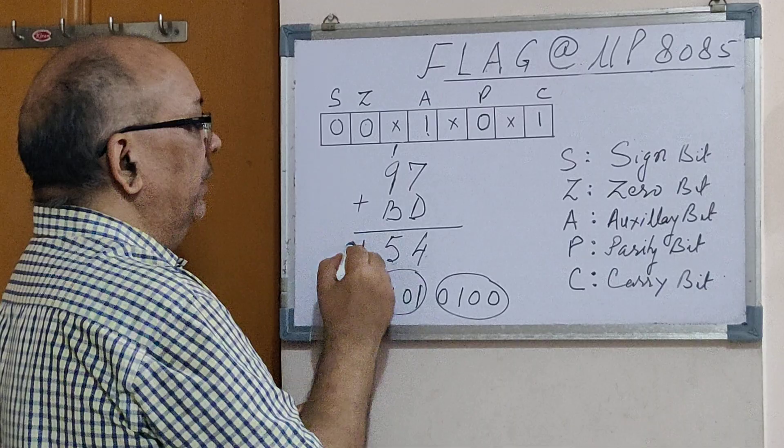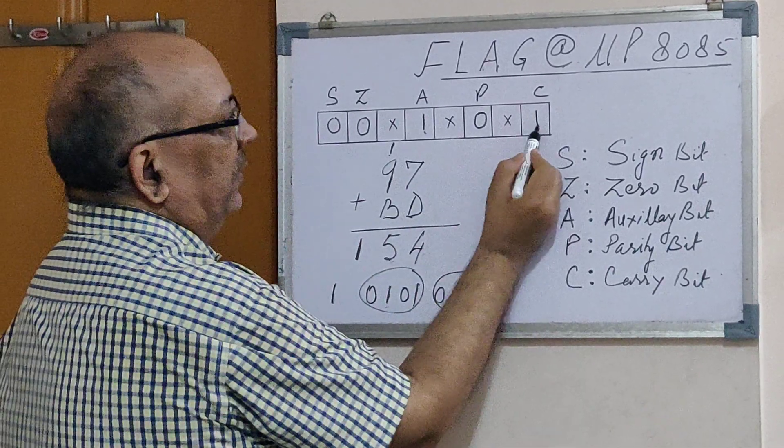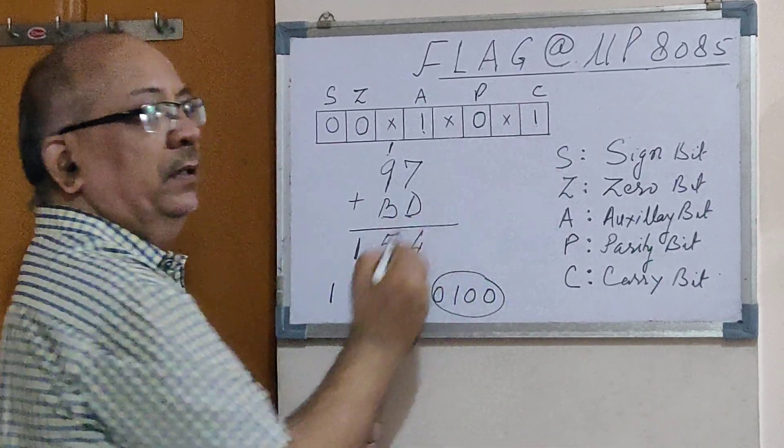Similarly, this 1 tells that there is a carry being generated. So wherever there is carry, this bit will set, otherwise it is reset.